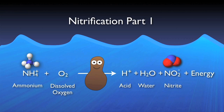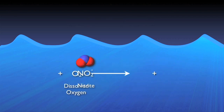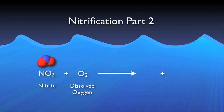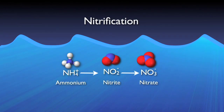The water produced is absorbed in the system, the nitrite moves on to the next step, and the energy is used by the bacteria to grow and multiply. The second step, for which a group of bugs known as nitrite oxidizers is largely responsible, takes that nitrite and more DO and converts it into nitrate and energy. This conversion from ammonia to nitrate is nitrification.